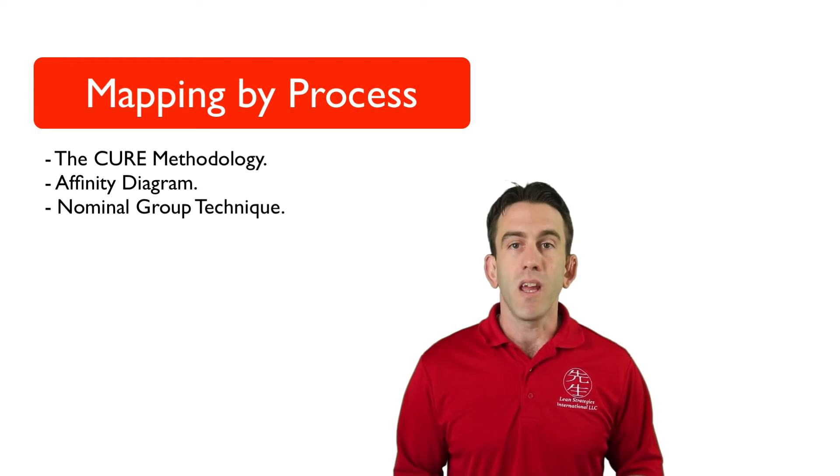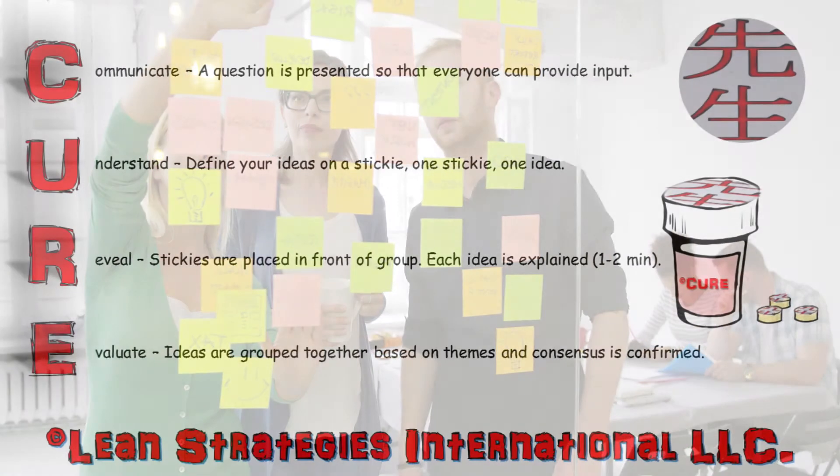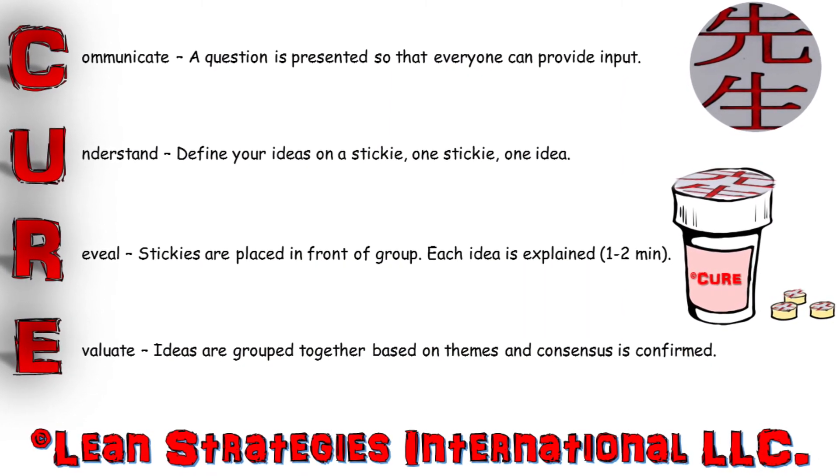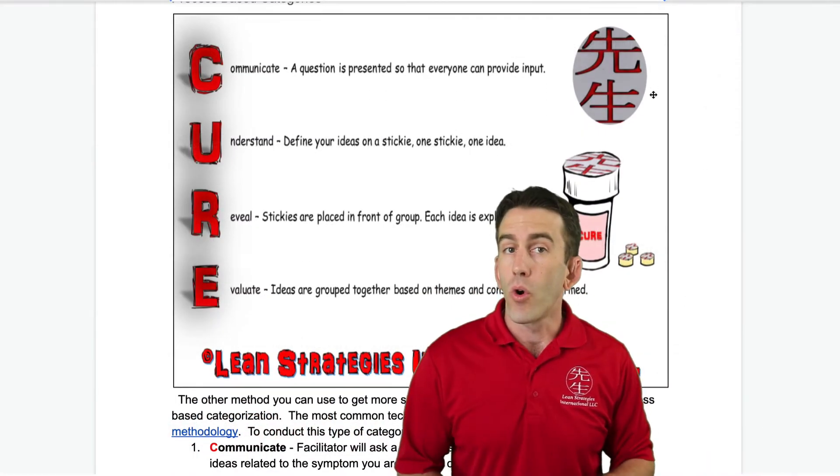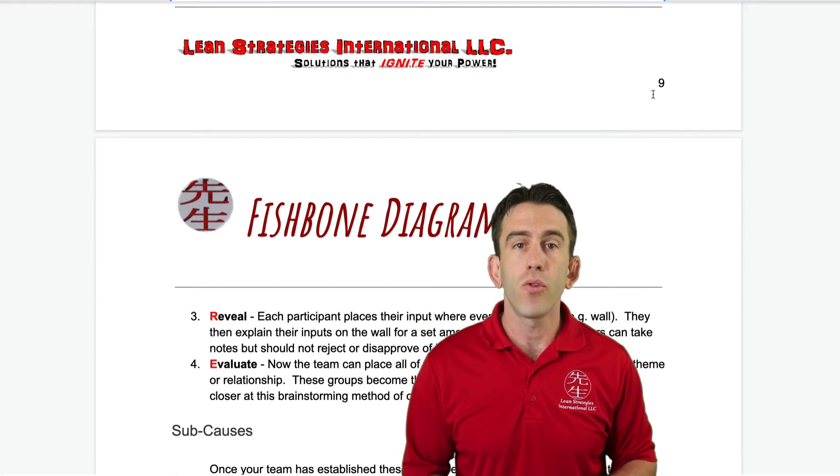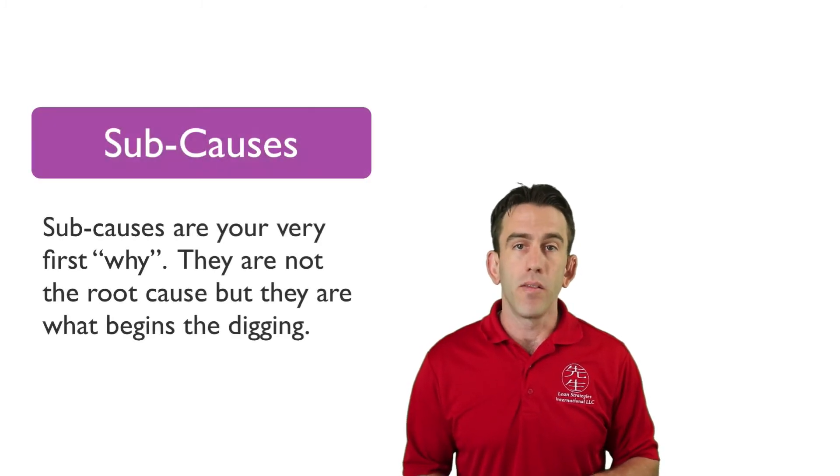The other method you can use to get more specific information for your categories is process-based categorization. The most common technique used is the affinity method or the cure methodology. While we won't go into detail of how to affinitize or cure your categories in this course, a high-level overview of how to cure your categories is shown in your handouts. Once your team has established these high-level general categories, it is time to begin establishing sub-causes.